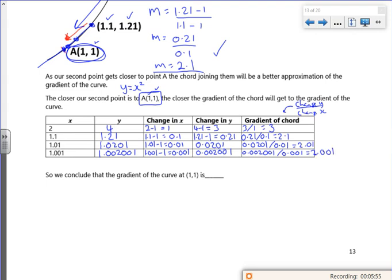So as you can tell, these values here are aiming towards a gradient of 2. Aiming towards 2.